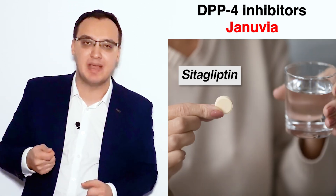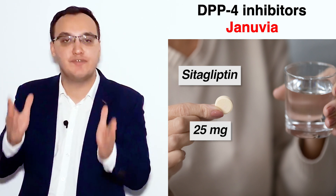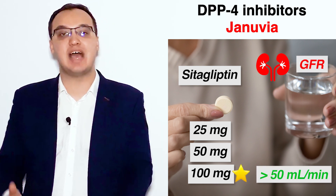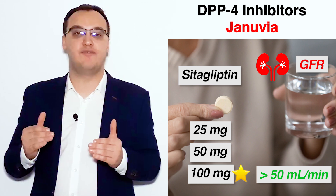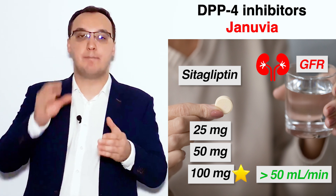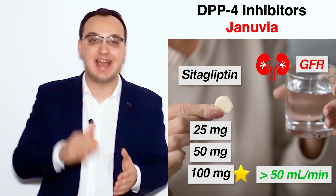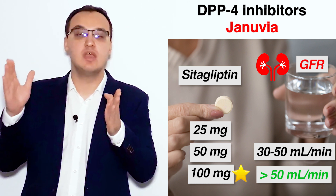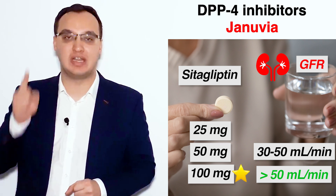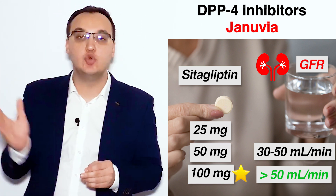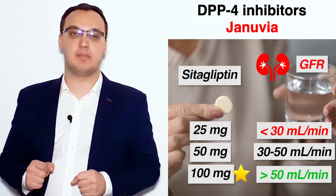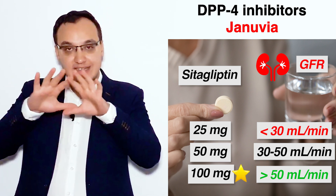Januvia is a tablet given for diabetic patients. We have 25 mg, 50 mg, and 100 mg doses. We start with 100 mg if the patient has normal kidney function. If GFR is 30–50 mL/min, we give 50 mg once per day. If GFR is less than 30 mL/min, we give 25 mg once per day.